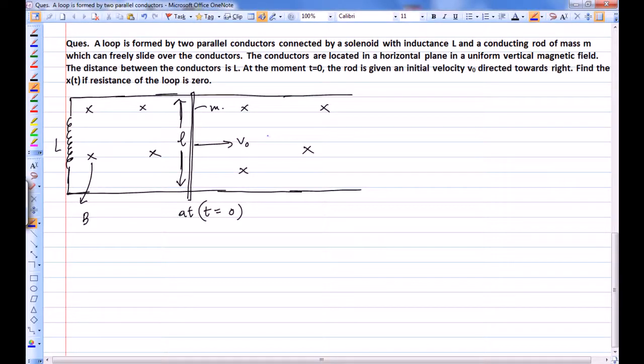There is a question given that there is a conducting rod dotted right with velocity V0 and an inductor here, but the resistance of the loop is zero. The conservation of energy will be valid and we can say that initially the total energy of this system is actually the kinetic energy of this rod.